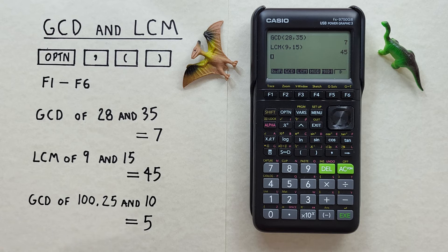What if we want to find the GCD or LCM of more than two numbers? For example, if we want to find the GCD of 100, 25, and 10. To do that, we have to put one GCD function inside of another. So to get started,